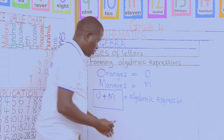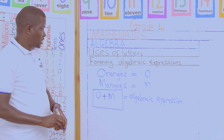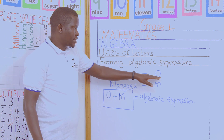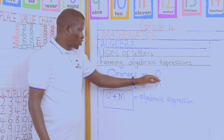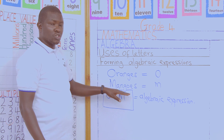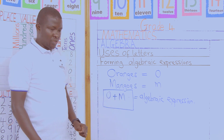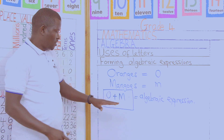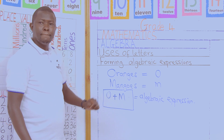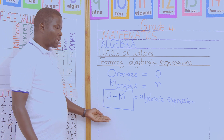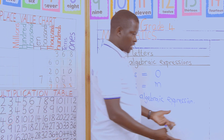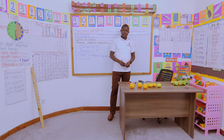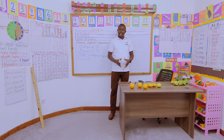To repeat: we had the number of oranges represented by O, and the number of mangoes represented by M. Bringing these fruits together, we have O oranges plus M mangoes, and this is what we call an algebraic expression.